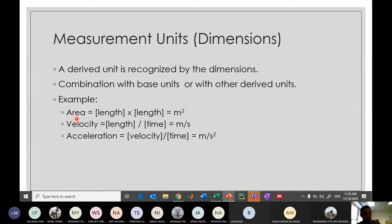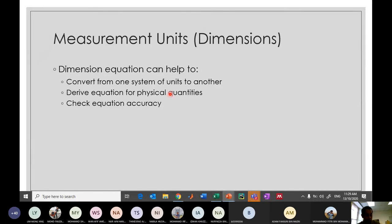These are three simple examples. If you want to find the area, area is actually the length times the length, so these are two base units, and you get the dimension as meter square. Velocity, we have the length divided by time. Length is a base unit, time is a different base unit, so we get the unit as meter per second. Acceleration, we have velocity divided by time. Velocity is a derived unit, time is a base unit, and we combine them together. The unit is given as meter per second square. So derived unit can be either combination with base unit with another base unit, or base unit with another derived unit. Dimensional equations can help to convert from one system of units to another, derive equations for physical quantities, and check equation accuracy.